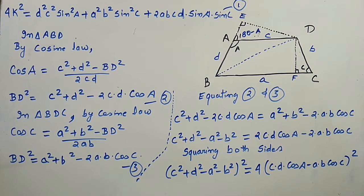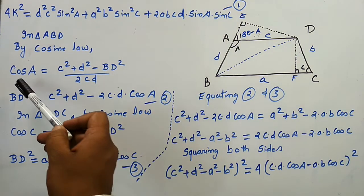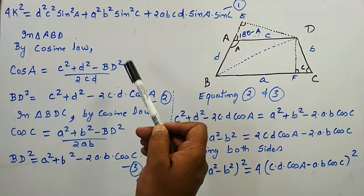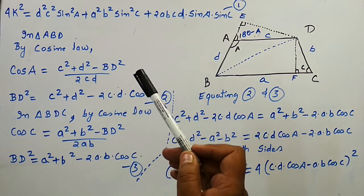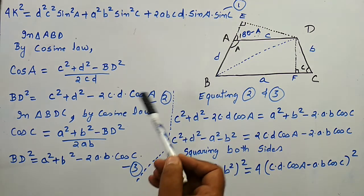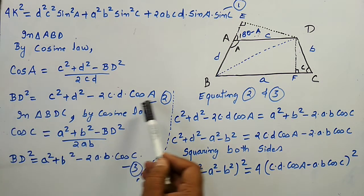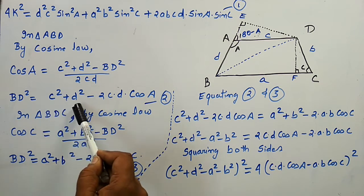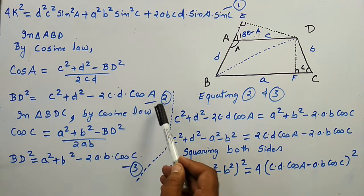Now if we apply the cosine law in triangle ABD, we get cos A equals (C² + D² − BD²) divided by 2CD. From here we can calculate BD², and BD² equals C² + D² − 2CD·cos A.